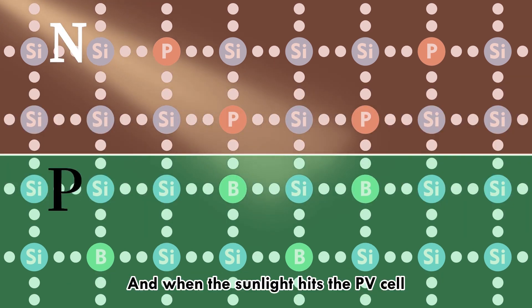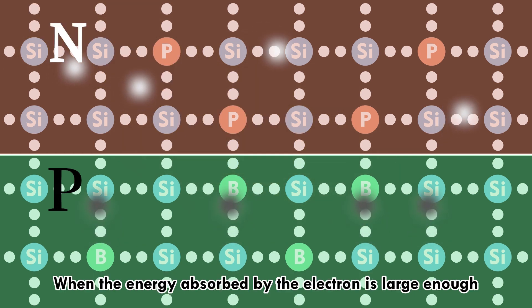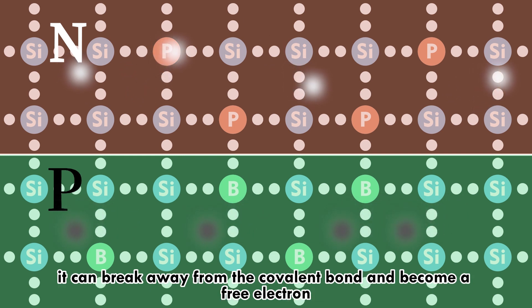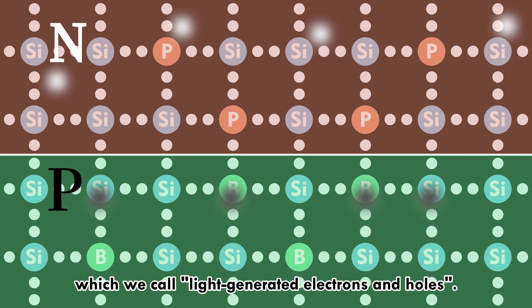When sunlight hits the PV cell, the photon energy in the light is partially absorbed by electrons. When the energy absorbed by an electron is large enough, it can break away from the covalent bond and become a free electron. Accordingly, a hole is also formed. These are called light-generated electrons and holes.